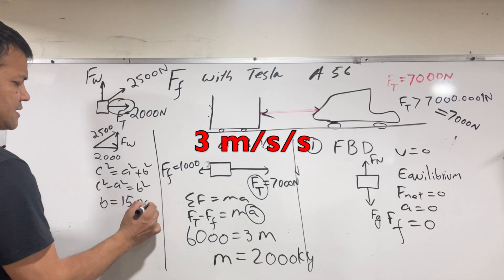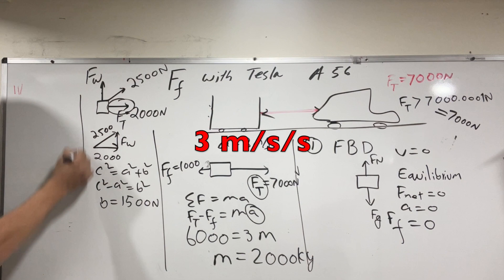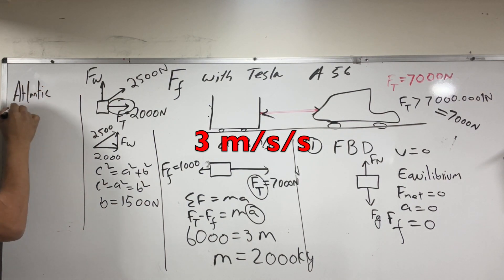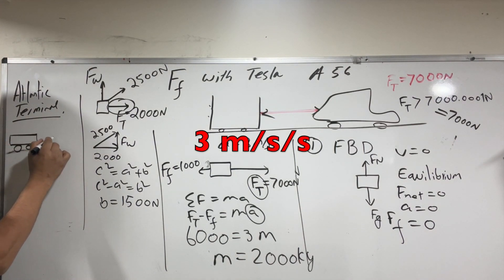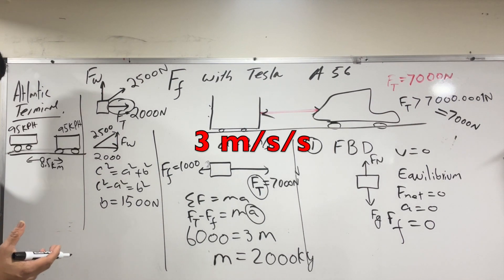We're gonna solve the last problem. Last problem: Mr. Barry at the Atlantic Terminal waiting for Long Island train to come home. He sees that two trains approach each other at the Atlantic Terminal with 95 kilometers per hour, and the distance between these two is 8.5 kilometers. How long is it going to take for these two cars to meet?